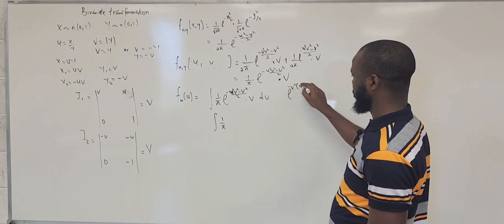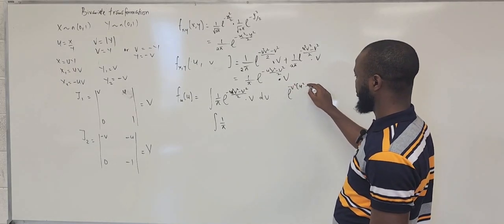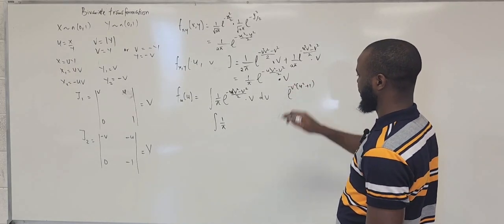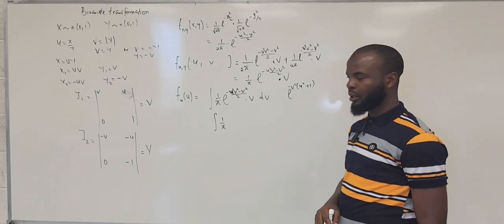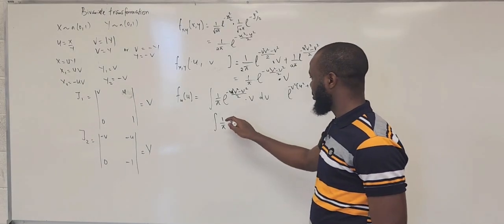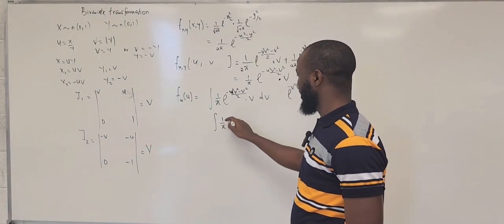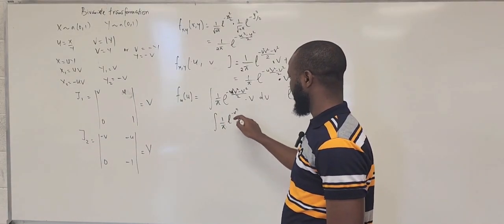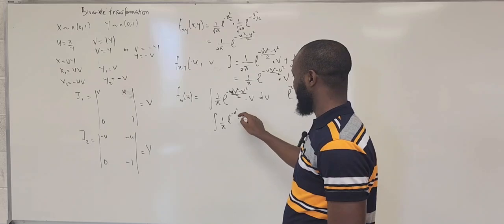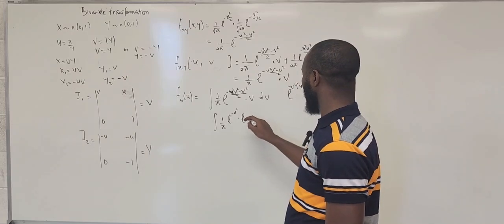So that means you can break it down as exponential minus v squared times u squared plus one.